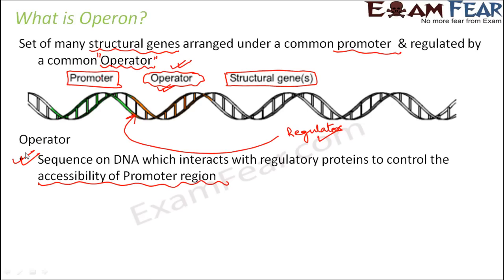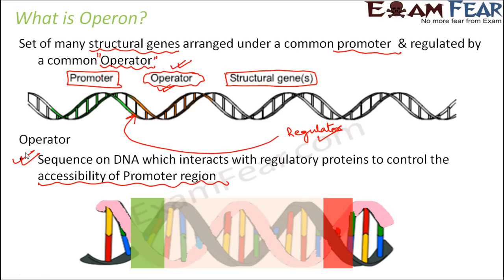If the promoter region doesn't allow RNA polymerase to bind to itself, transcription will not be able to take place. The operator and the regulator together ensure that when they want to put the genes in the off position, they make the promoter inaccessible, whereas when they want the genes turned on, they make the promoter accessible.